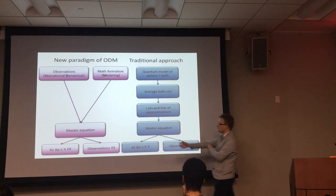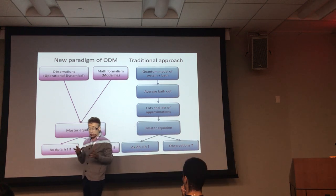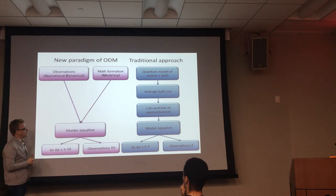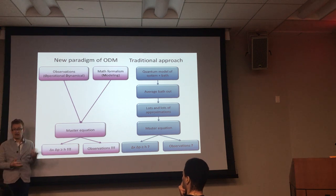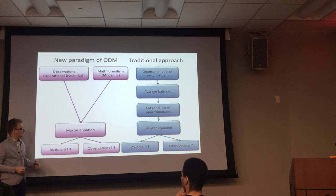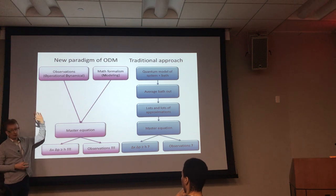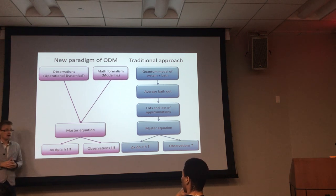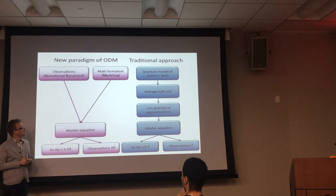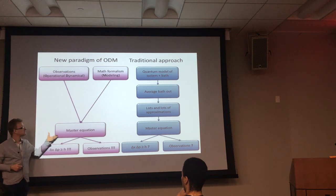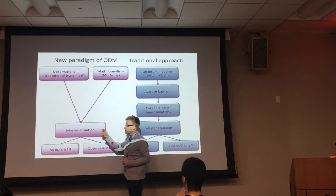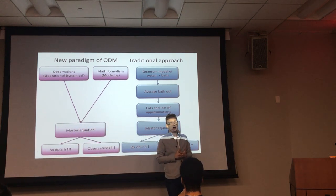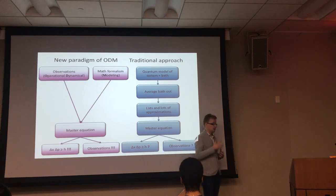We begin by stating what kind of dynamics we want to capture for the master equation, and then what type of language we want to describe it in - is it quantum, classical, or some hybrid model? If these two inputs are compatible - because they sometimes may not be - then the set of methods gives us an equation of motion for the density matrix. By construction, this master equation will be able to capture observations of interest, and by construction, if you want it to be quantum, it will be quantum.